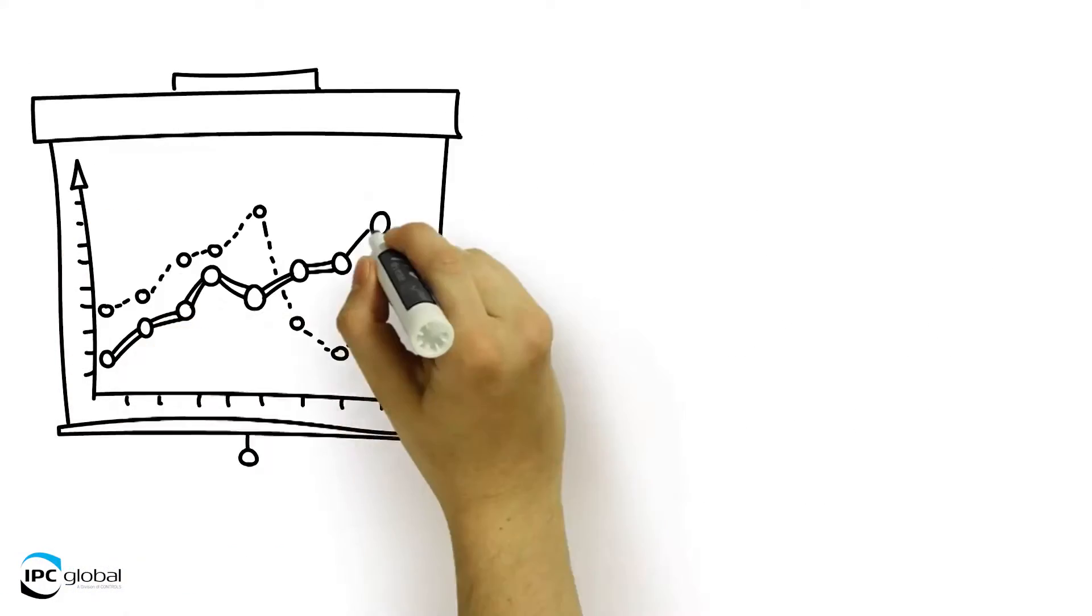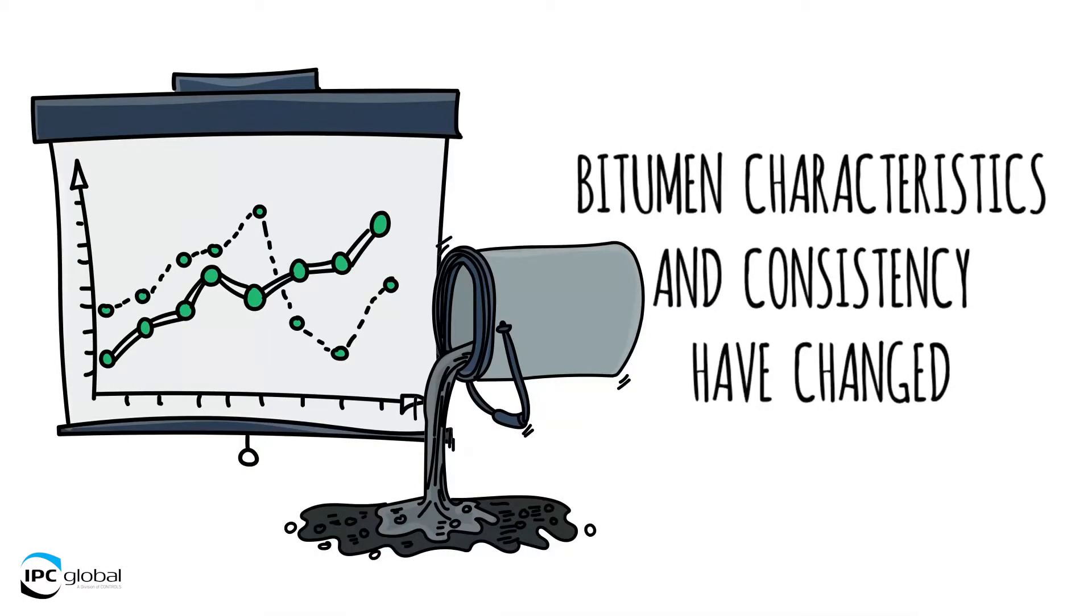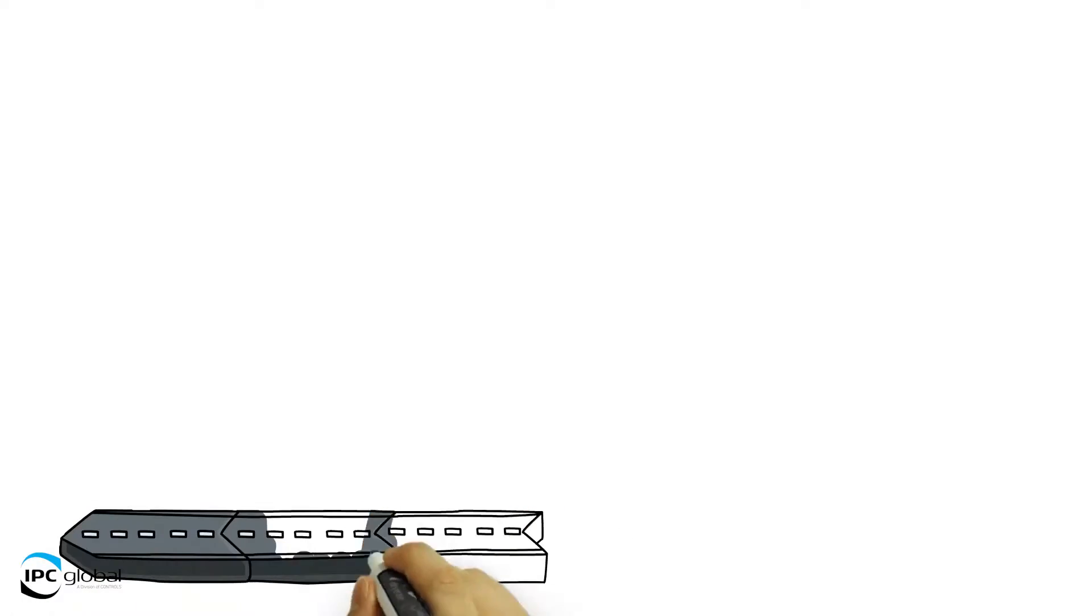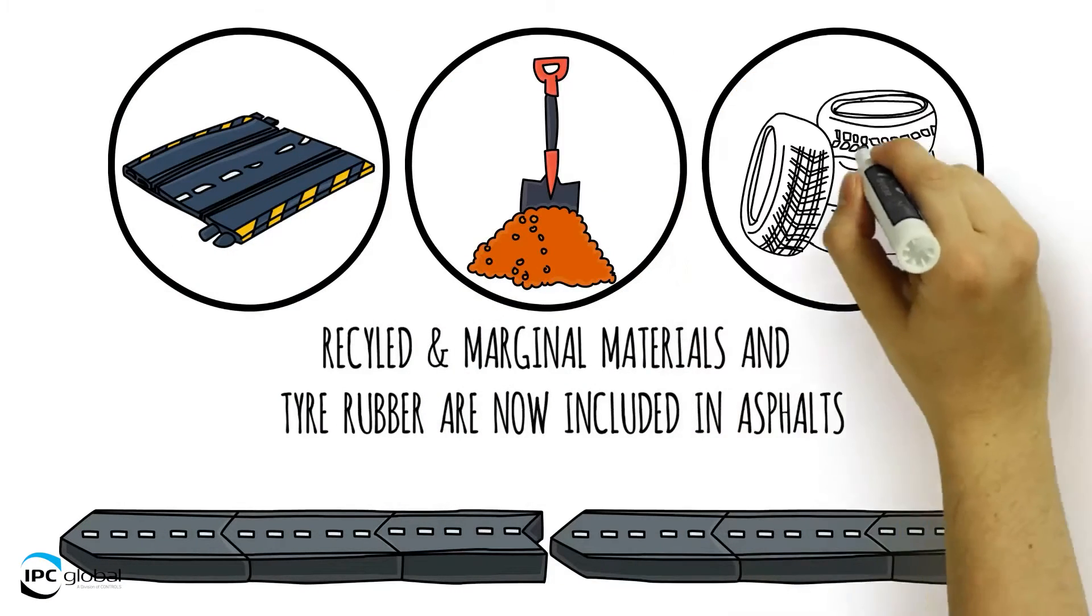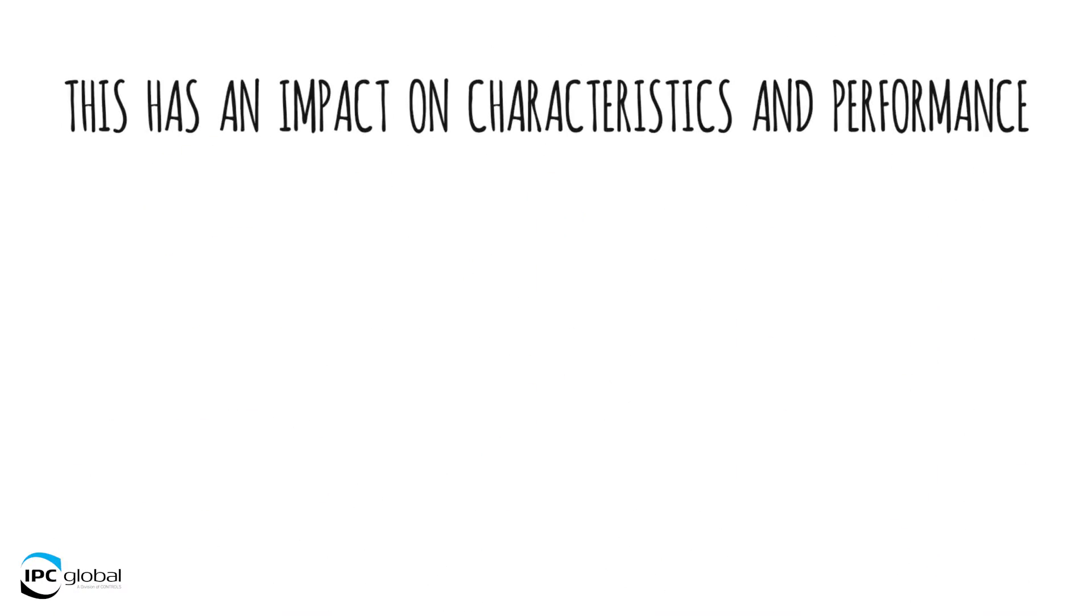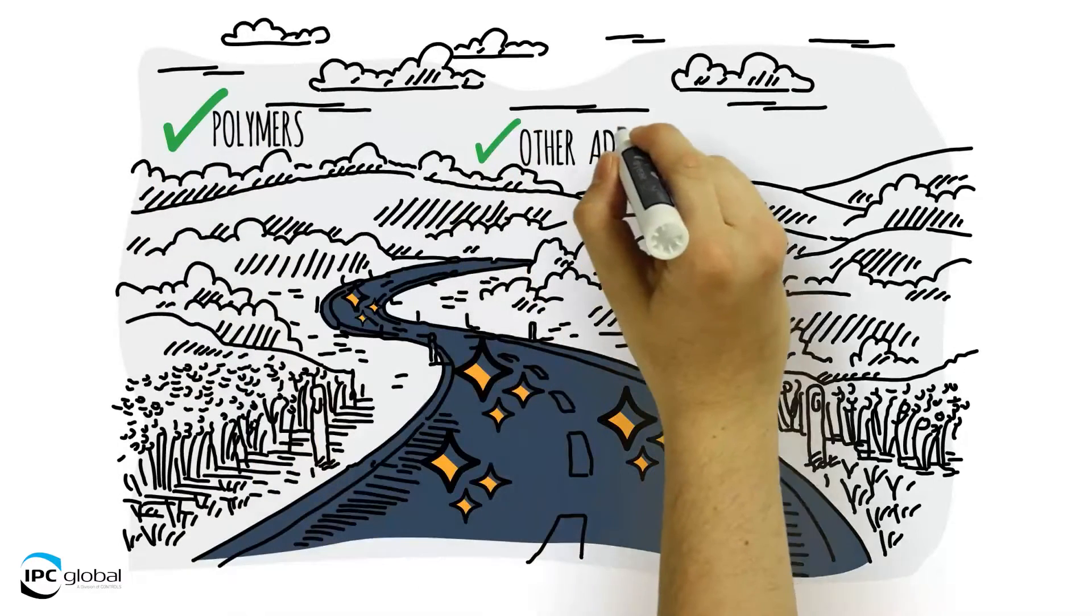Oil economics and global factors have affected bitumen characteristics and consistency. Recycled and marginal materials and tire rubber now included in asphalt for environmental and economic reasons affect characteristics and performance. Polymers and other additives are used to modify binder characteristics and improve performance.